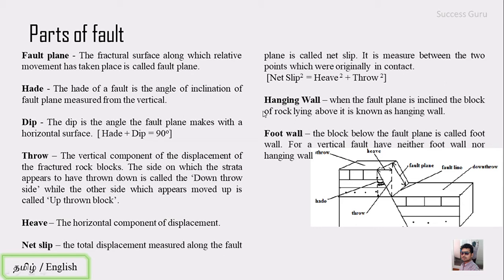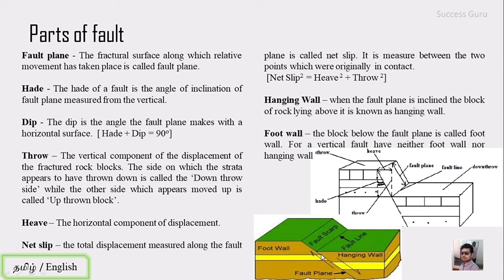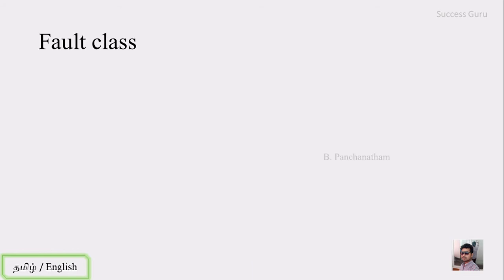The next heading is the hanging wall and foot wall. The hanging wall is the block present above the fault plane — it is just hanging there. The foot wall is the block present below the fault plane. Remember, if the fault is vertical, there is no foot wall or hanging wall. The foot wall and hanging wall concepts are only applicable for an inclined fault plane.